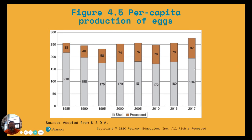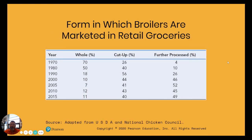Per capita egg consumption gives you about a 40-year historical look at shell versus processed eggs. As for how broilers were marketed in retail grocery stores — if you go back to 1970, about 70% of all broilers were marketed as whole broilers, and only about a quarter were marketed cut up into retail cuts.